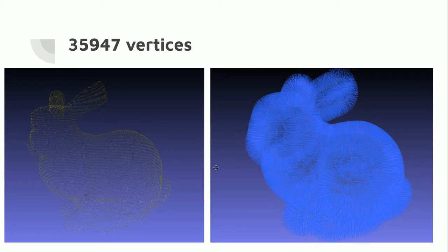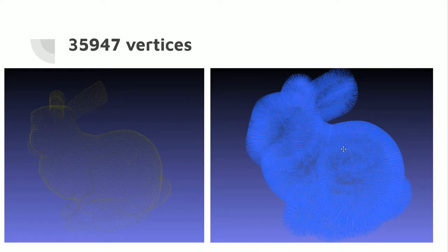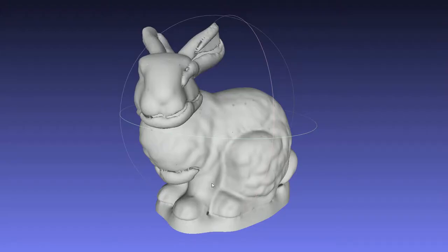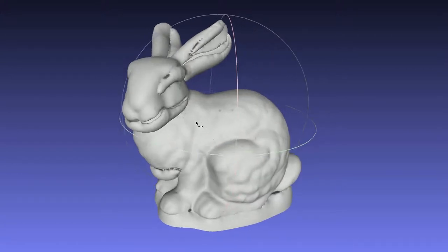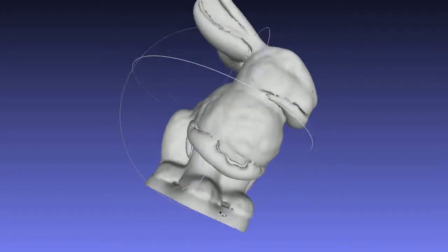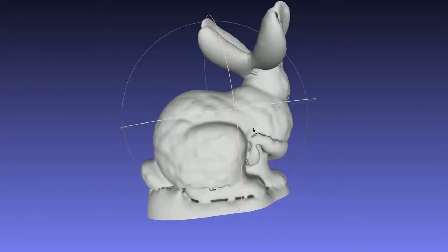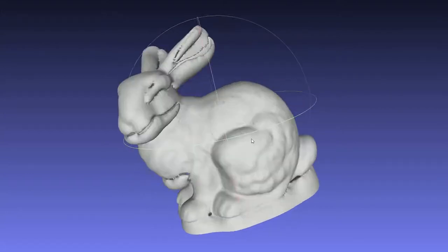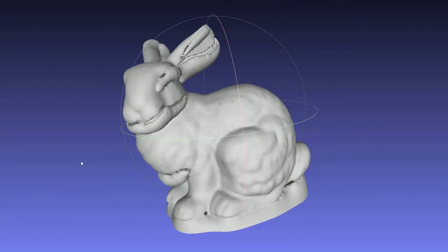Moving on to the Stanford bunny, here are the points and the normals. This is the ground truth, and this is what we actually get. We see that there are some errors around the chin, the eye, the ears, the chest, and also the bunny is standing on a stand that does not exist for the ground truth.